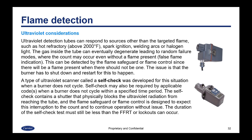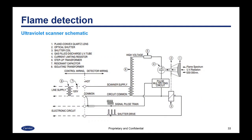A type of ultraviolet scanner called a self-check was developed for situations when a burner does not cycle. Self-check may also be required by applicable codes when a burner does not cycle within a specific time period — 24 hours is a common time period. The self-check contains a shutter that physically blocks the ultraviolet radiation from reaching the tube, and the flame safeguard is designed to expect the interruption to the count and continue operation without issue. The duration of the self-check test must still be less than the flame failure response time or lockouts can occur. Here is a schematic of how an ultraviolet system works, showing the electronics as well as where the flame reaches the bulb — the physical manifestation of sensing the flame.